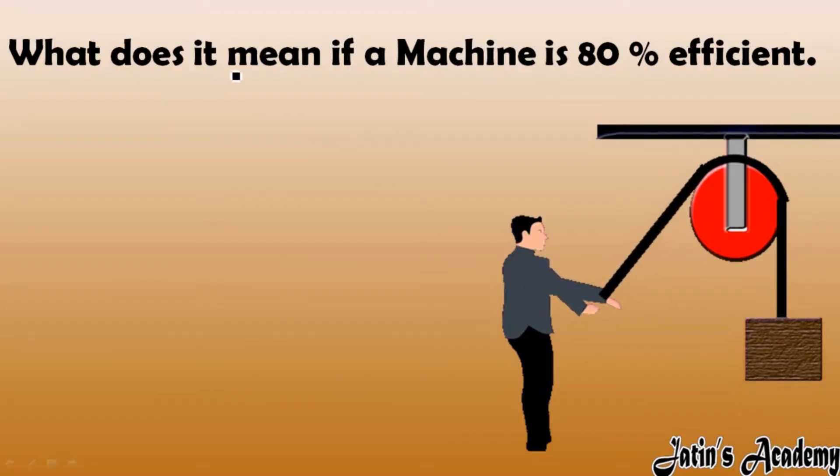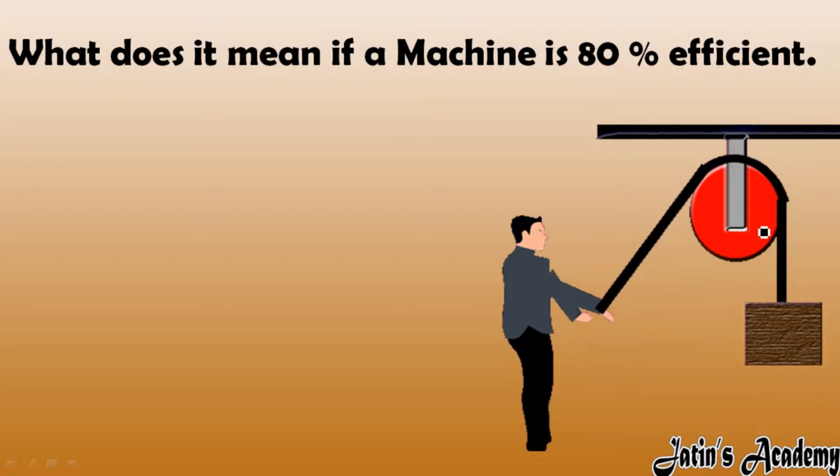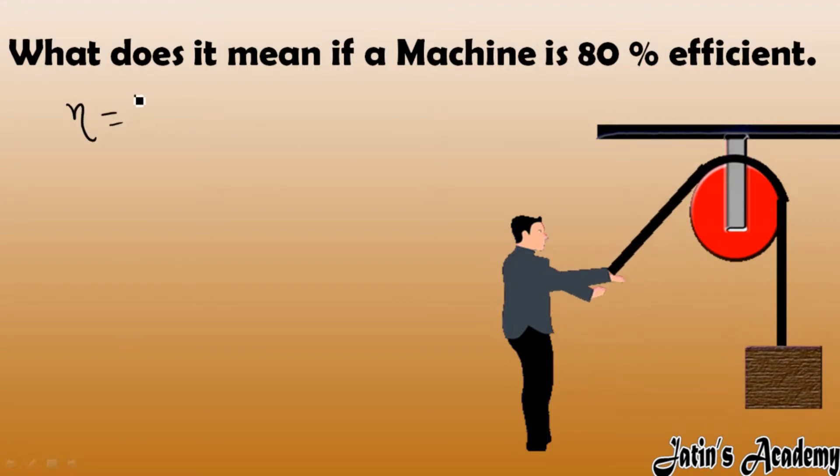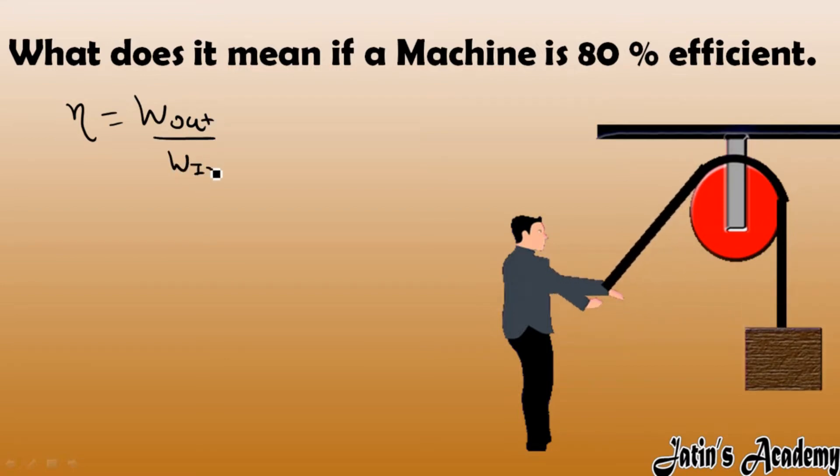What does it mean if a machine is 80% efficient? For example, this pulley is 80% efficient. What is the meaning of this? We know that efficiency is equal to work output over work input.